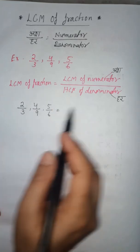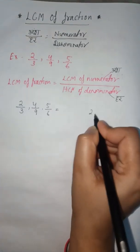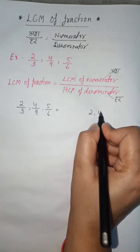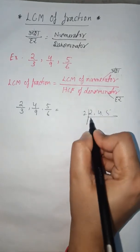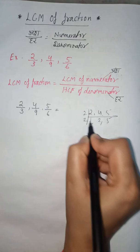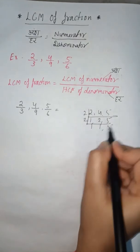Now first we start to find out the LCM of numerators 2, 4, and 5. We'll write like this: 2 divides into 2 and 4. Two 1s are 2, two 2s are 4, and 5. Now 1, 2, and 5.